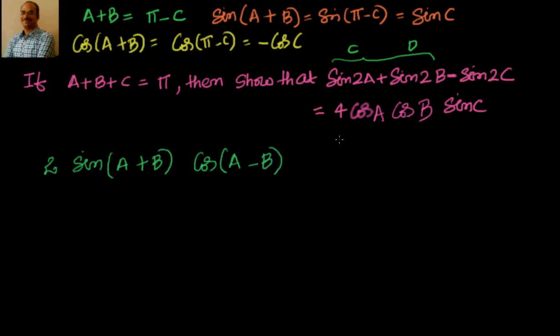This we have seen earlier also, 2a plus 2b by 2, 2a minus 2b by 2, that is 2 sin of a plus b cos of a minus b minus sin 2c, that is nothing but equal to 2 sin c cos c.